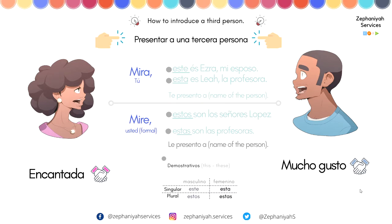If you remember from the foundational video, the introduction video from the series, this is what we cover under introducing a third person. We can say, for example, 'mira' — if you're talking to a person that you are familiar with. 'Mira, este es' — follow by the person's name — this is for masculine. For example: 'este es Esra, mi esposo.' Or 'mira, esta es Lía, la profesora.'